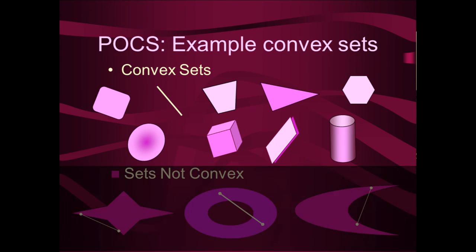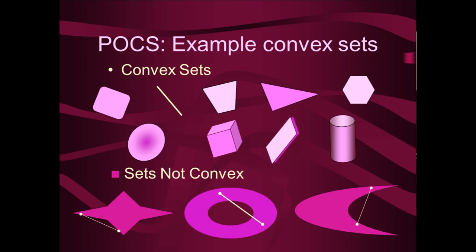The next slide shows sets which are not convex. We see the star on the left: we can choose x and y and the connecting line segment is partially external to the set. Same thing for the torus — the annulus or donut-shaped figure — where if we choose two values of x and y, the middle part isn't totally within the donut. Last, we have the crescent moon on the right where the line segment connecting two chosen points is not totally subsumed within the set, so it is not convex.